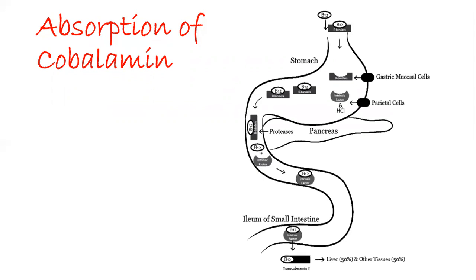Hence the pepsin acts in cleaving this vitamin B12 in the stomach. The free cobalamin then binds to haptocorrin. Haptocorrin is secreted by saliva. Now this haptocorrin is also said to be R binder. It binds to cobalamin and this complex is cleaved by protease.